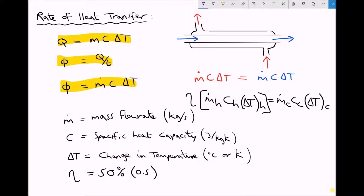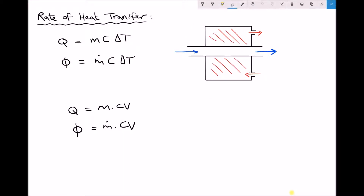Let's look at a similar energy balance problem, but this time considering a combustion process. Referring to the diagram on the right, we have a cold fluid — let's say water — traveling through a boiler where combustion takes place. A fuel is burned in the presence of oxygen, releasing energy that is transferred to the fluid. The energy released during combustion equals the mass of the fuel times the calorific value of the fuel. The calorific value is simply the amount of energy stored and releasable per kilogram of fuel.